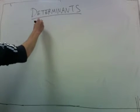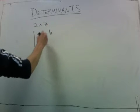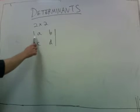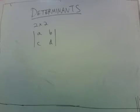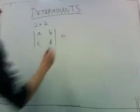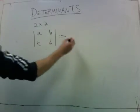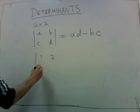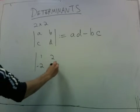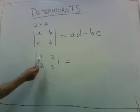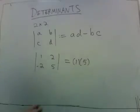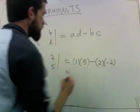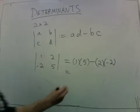Let's start with the 2×2 determinant. Given a 2×2 grid of numbers A, B, C, D, we write bars around it to denote the determinant, and the definition is AD minus BC. For example, the determinant of 1, 2, negative 2, 5 is 1 times 5 minus 2 times negative 2, which gives 5 plus 4 equals 9.